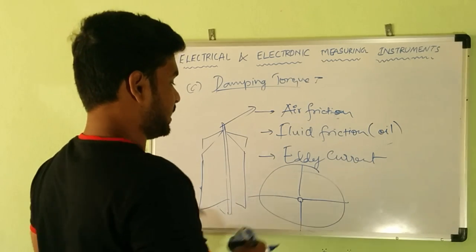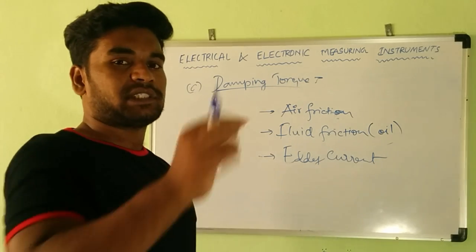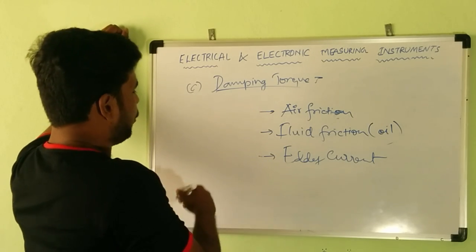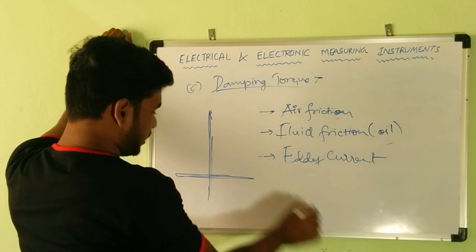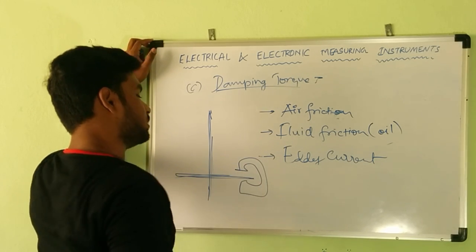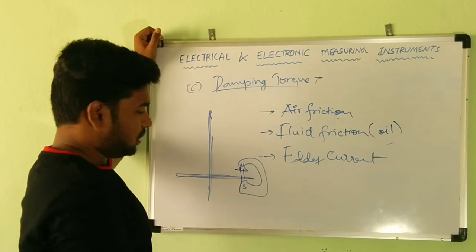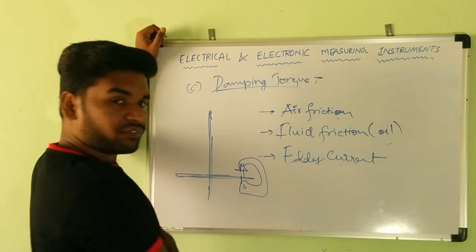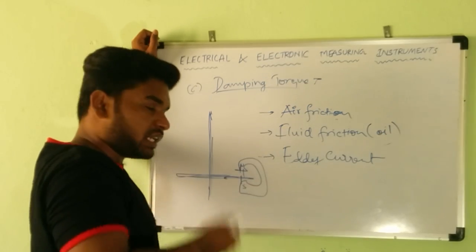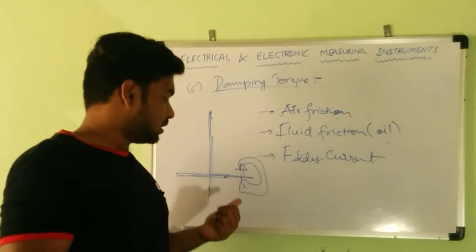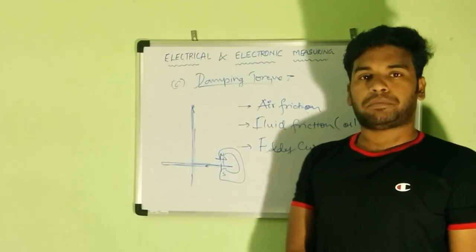The latest and most efficient technique is eddy current damping. In eddy current damping we use eddy currents. A spindle of a meter has an aluminium disc mounted to it, and I place a permanent magnet near the disc. When the disc oscillates, it cuts the magnetic field of the permanent magnet, which introduces eddy currents in the disc. These eddy currents produce a force that opposes the cause producing them — the oscillations — thereby producing enough damping torque.